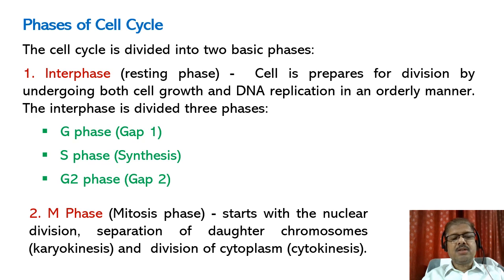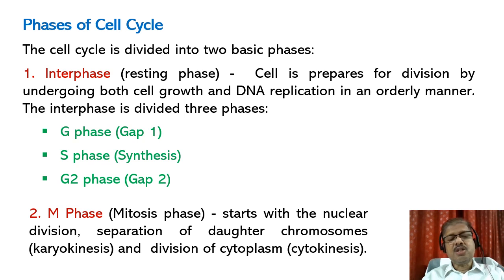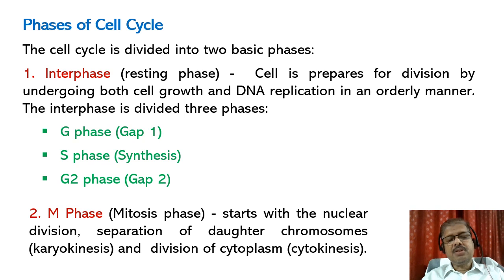The M phase, or mitosis phase — interphase represents the phase between two successive M phases. The M phase starts with nuclear division corresponding to the separation of daughter chromosomes, that is karyokinesis, and usually ends with the division of cytoplasm, that is cytokinesis. In the cell cycle, 95% of time is spent in interphase, whereas mitosis and cytokinesis last only about an hour.